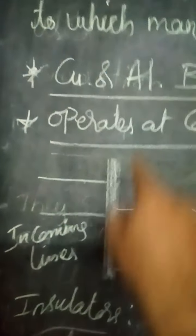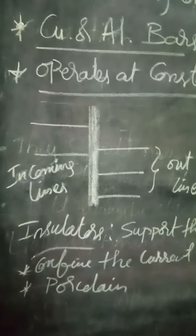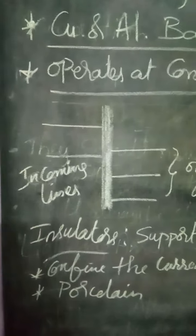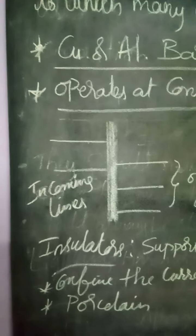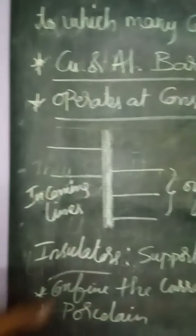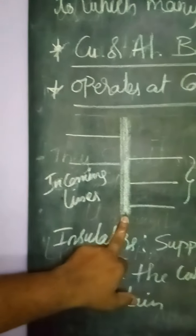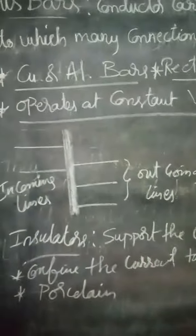The bus bar has the capacity to hold more current and distribute it to n number of outgoing lines. It is made up of thick copper or aluminium bars in a rectangular shape with more thickness so that it can withstand the high current. A simple conductor carries a smaller current; when current is greater, the cross-sectional area must be increased.